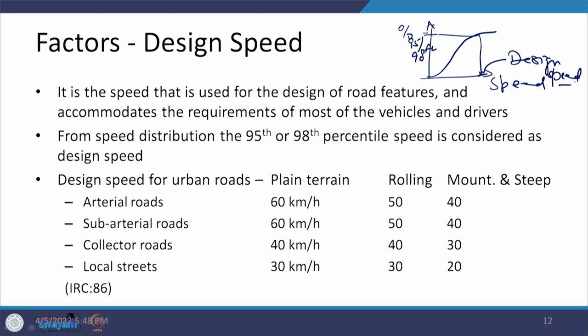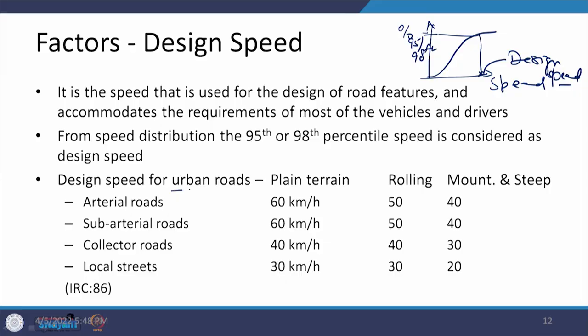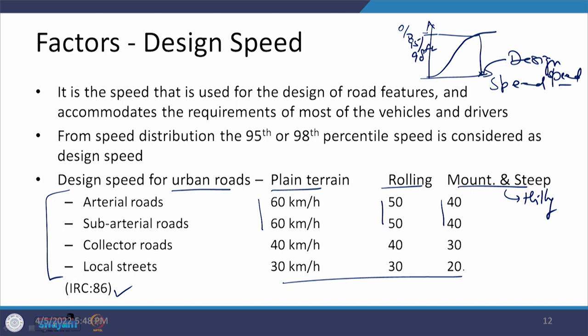If you do not have existing data and are designing a new road, tentative values are given by the Indian Roads Congress. For urban roads, refer to IRC 86. These speeds have been defined for three terrain conditions: plain, rolling, and mountainous and steep. The speeds for arterial and sub-arterial roads are more or less the same, but they reduce for lower-class facilities. For local streets, speeds are in the range of 20 to 30 kilometers per hour.